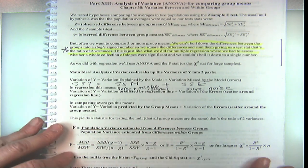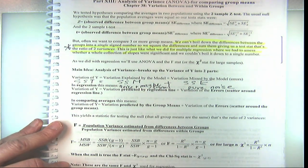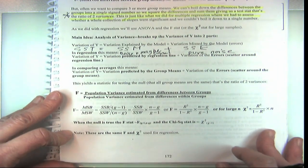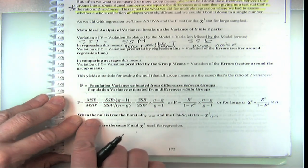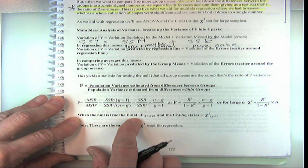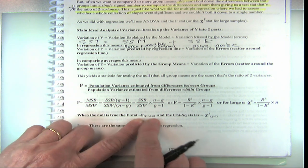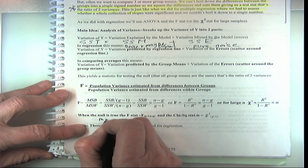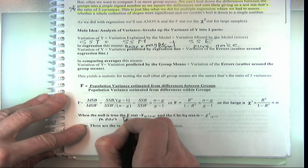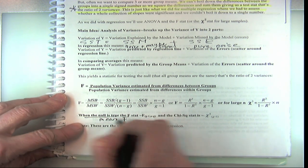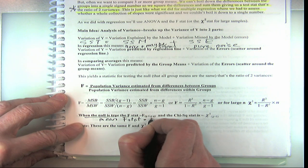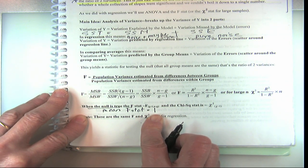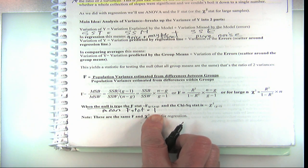This is all going to make a lot more sense when we do an example. I want to clarify: when the null is true, the mean of the F statistic is one, because when the null is true it means our model is no better — it's just noise too. So the ratio of those two is just one. And the mean of the chi-square, because it doesn't normalize the curve, is shifted over — its mean is equal to its degrees of freedom.